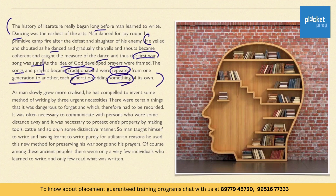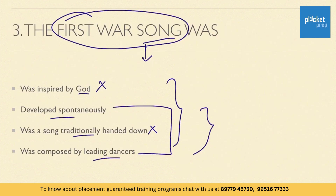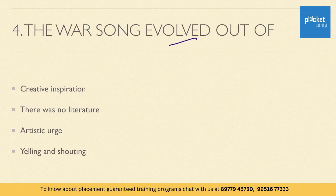Observing the line: 'he yelled and shouted as he danced, and gradually the yells and shouts became coherent and caught the measure of the dance, and thus the first war song was sung' — it is not evident that the dancers composed the first song, but it is clear that it developed spontaneously from the yelling and shouting. Therefore option two is the right answer — the war song evolved out of yelling and shouting.